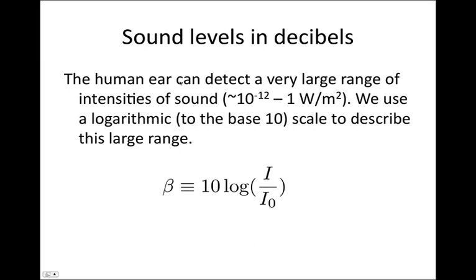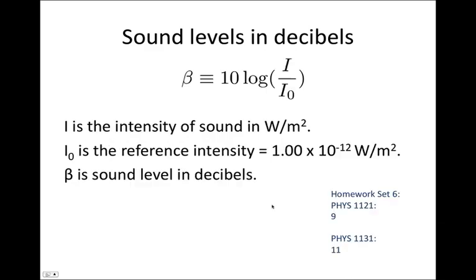On to new material: sound levels in decibels. The human ear can detect a very large range of intensities of sound, from 10⁻¹² up to 1 watt per meter squared. We use a logarithmic base-10 scale to describe this large range. Beta, the sound level in decibels, is given by the expression: 10 log(I / I₀), where I is the intensity of sound in watts per meter squared, and I₀ is the reference intensity — the lowest sound the human ear can pick up — which is 1 × 10⁻¹² watts per meter squared.